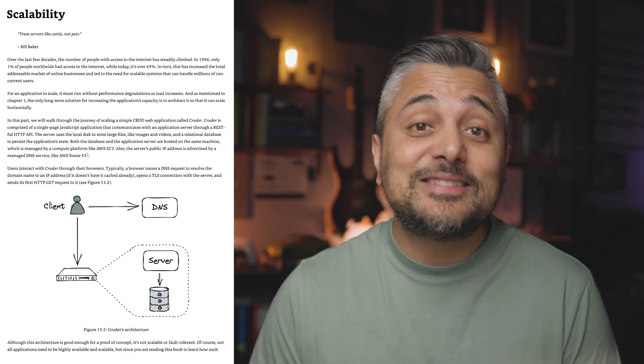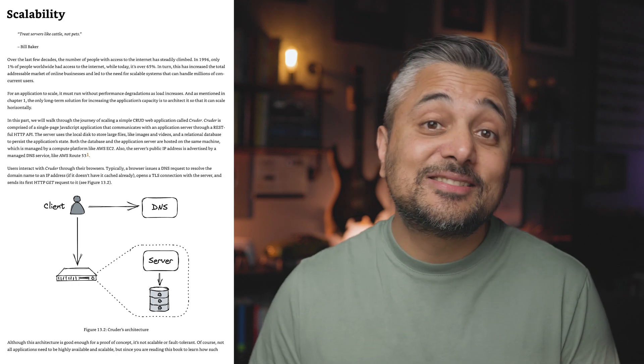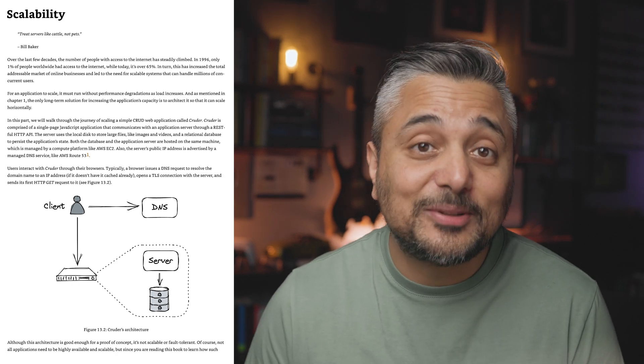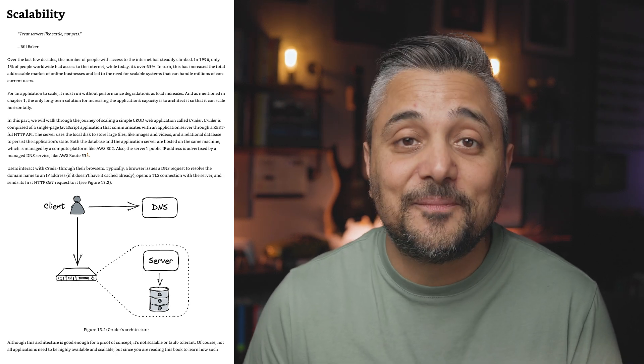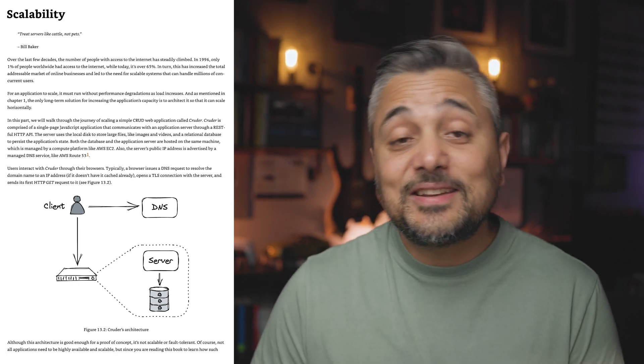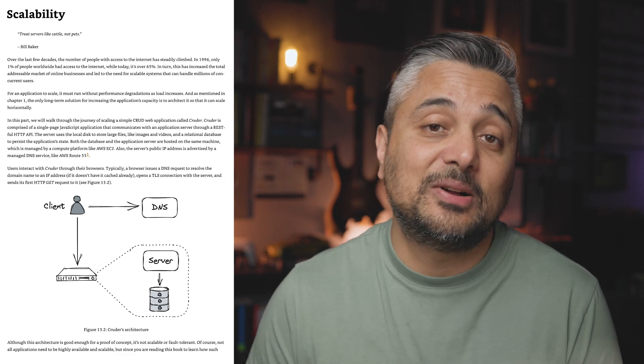However, a distributed system that can handle scale but is unreliable isn't any good. And that is what the fourth section of this book is about: resiliency. In this section, the author talks about single points of failure, circuit breakers, retry patterns, rate limiting, and much more — basically what we refer to as upstream and downstream resiliency.